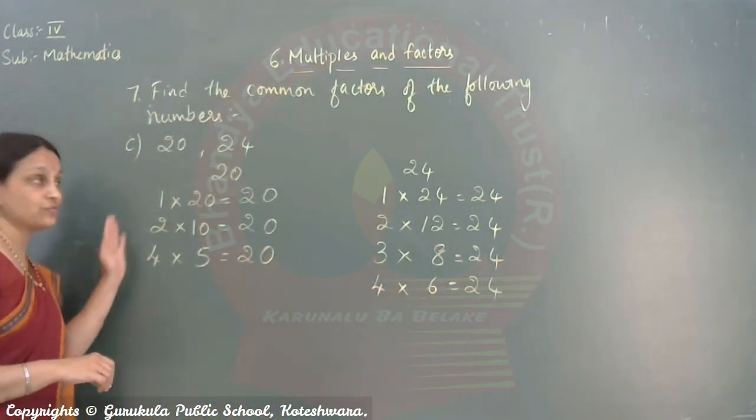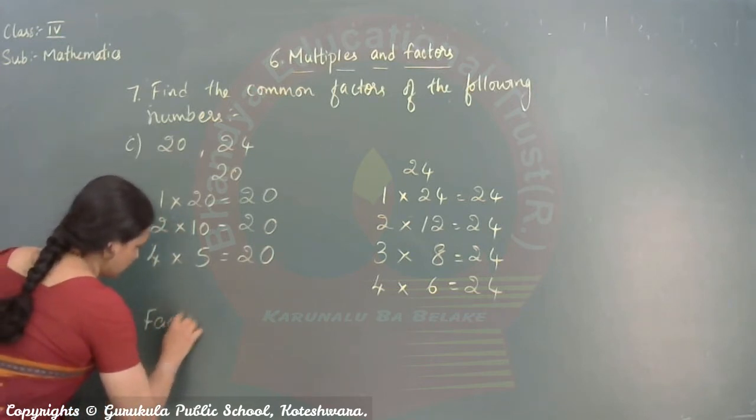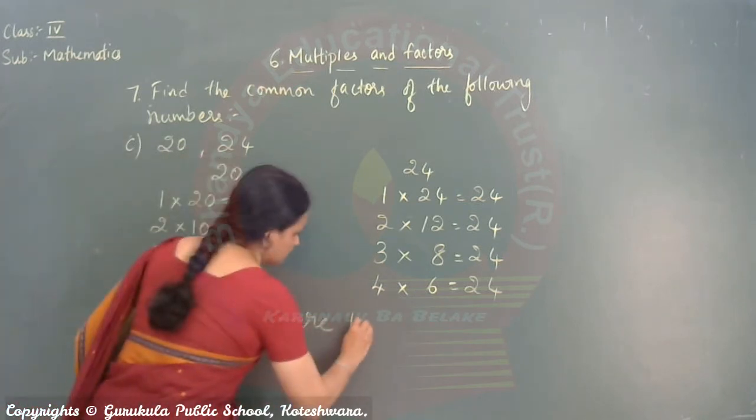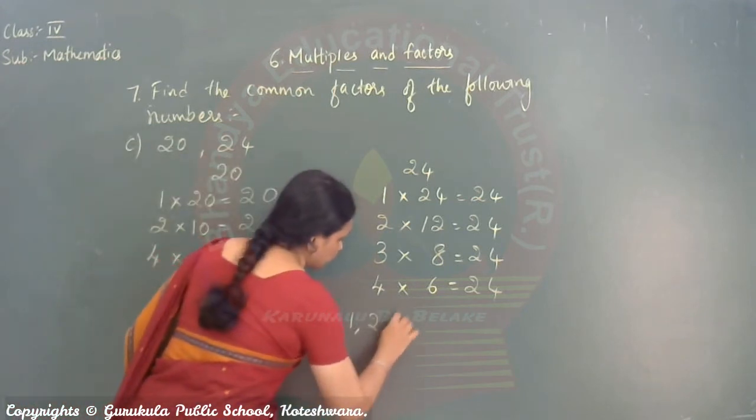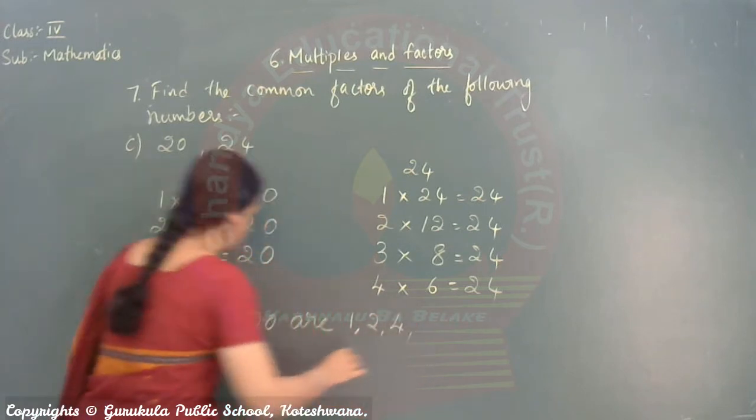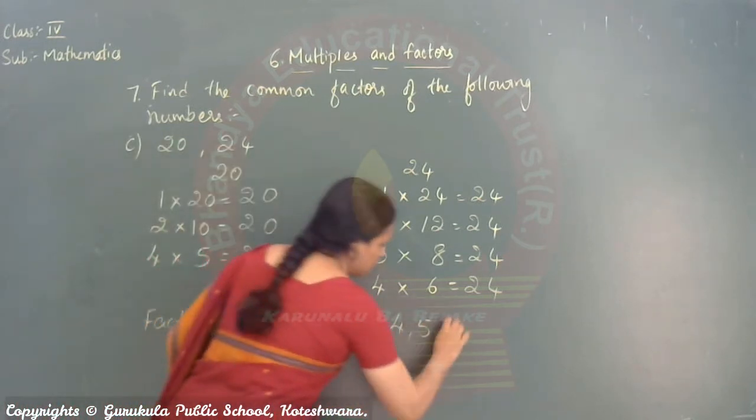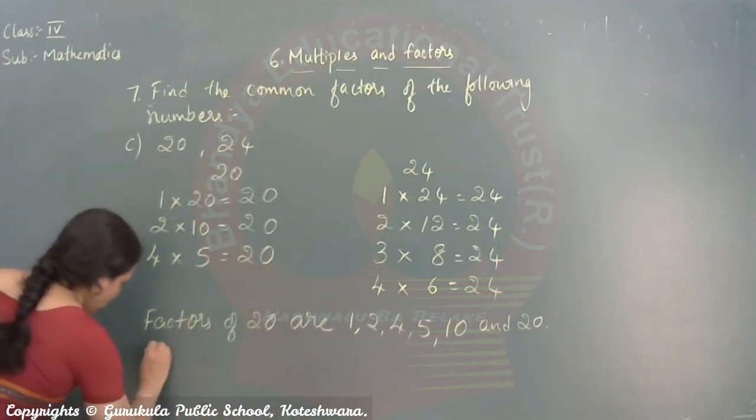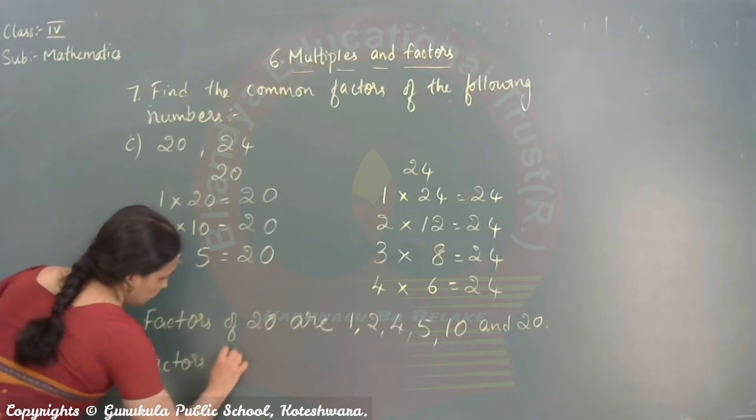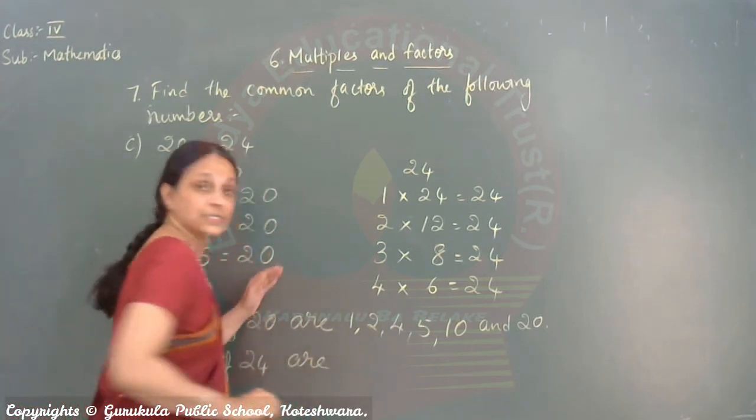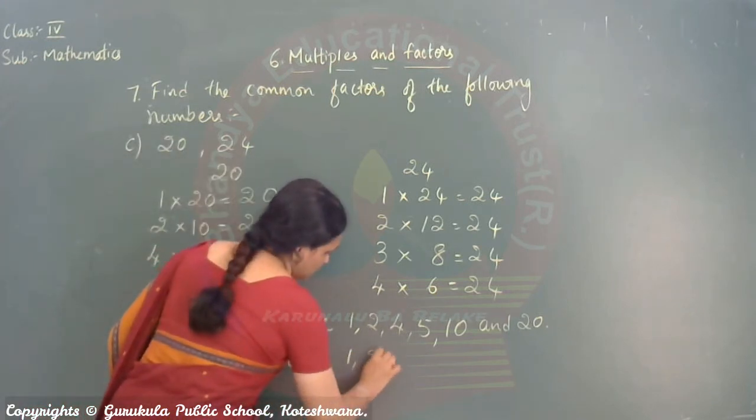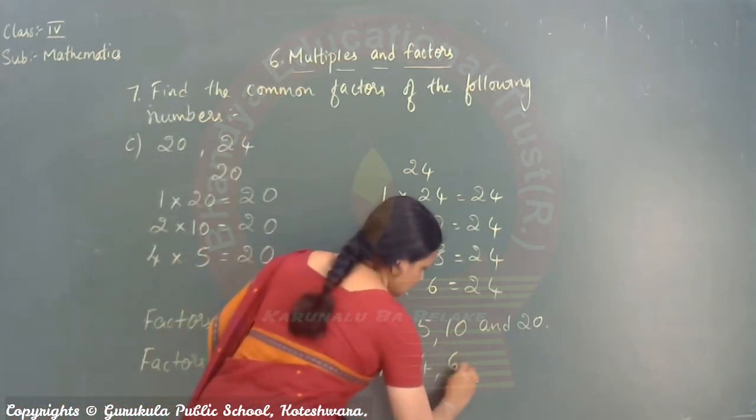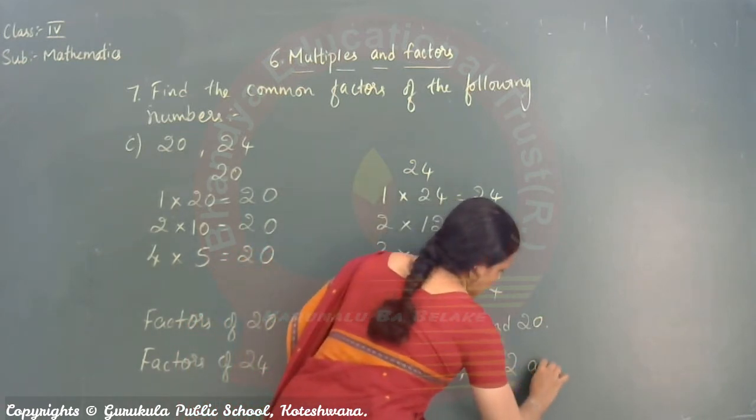Now. List out the factors of two numbers. Factors of 20 are. How do you write. Start from this side. 1, 2, 4, 5, 10, and 20. Next. Factors of 24. Tell me. What are the factors of 24. List out. 1, 2, 3, 4, then 6, 8, 12, and 24.